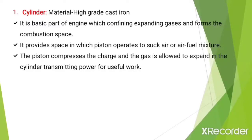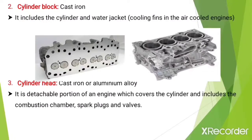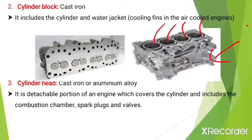The next component is the cylinder block, made up of cast iron. The cylinder block includes the cylinder and water jacket. The cylinder liners are surrounded by the water jacket for cooling of the engine. In some cases, instead of a water jacket, cooling fins are present in air-cooled engines.